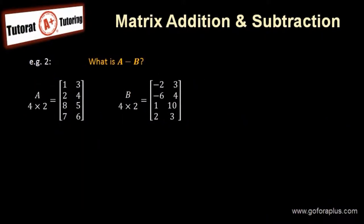So how do we do matrix subtraction? It's the same condition as matrix addition. We have to have the matrix the same size. In this case, 4 by 2 of matrix A. Matrix B as well, 4 by 2. Then we can perform subtraction.